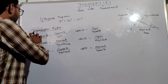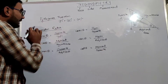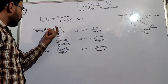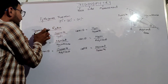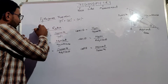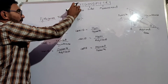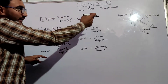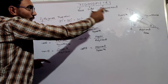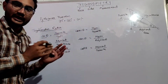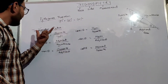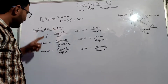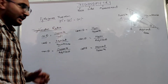Now comes another term: Trigonometric ratios. As we can see from the name, Trigonometric ratios — where Trigonometric is derived from Trigonometry — the ratios of sides of a right angle triangle are known as Trigonometric ratios. There are six Trigonometric ratios.